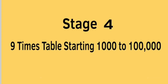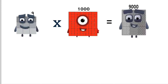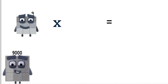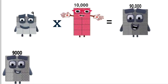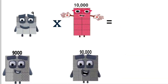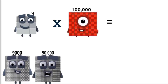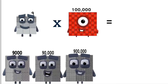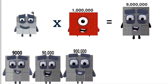Stage 4. 9 times 1,000 equals 9,000. Times 10,000 equals 90,000. Times 100,000 equals 900,000. Times 1,000,000 equals 9,000,000.